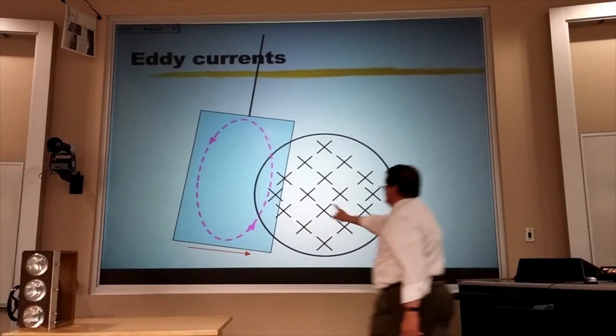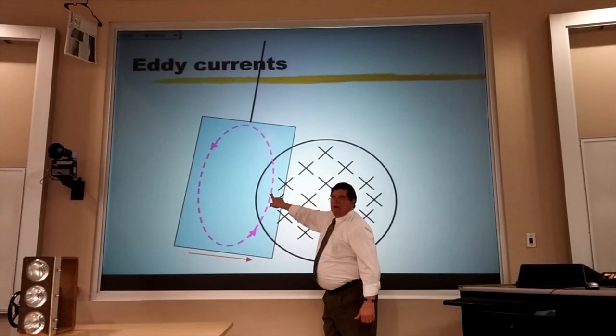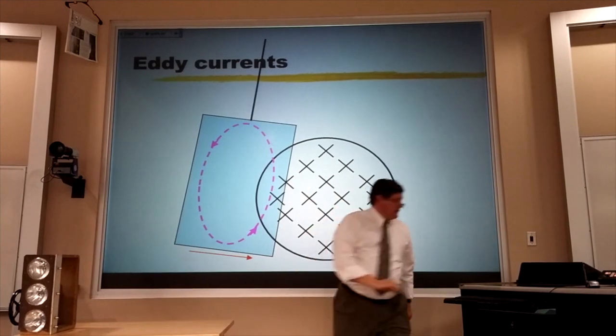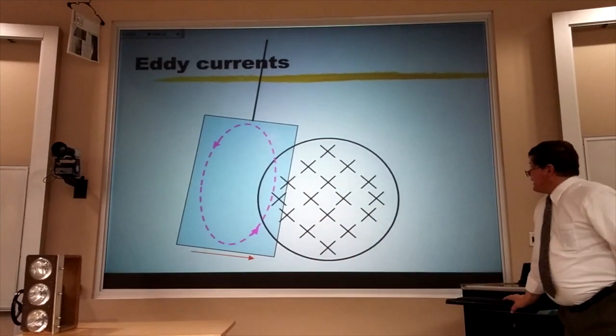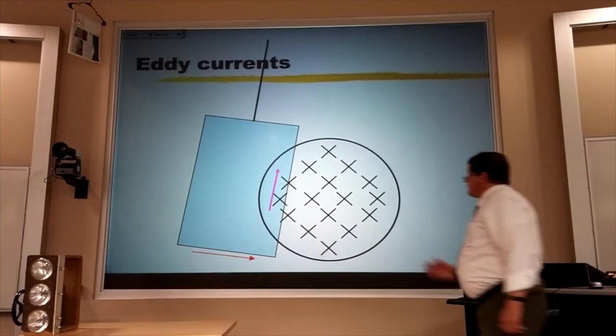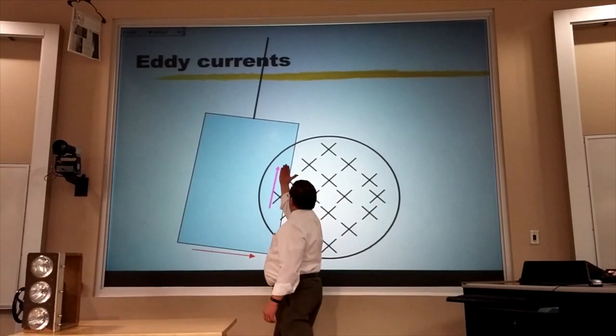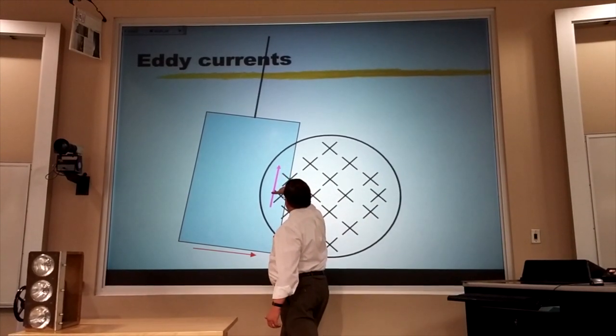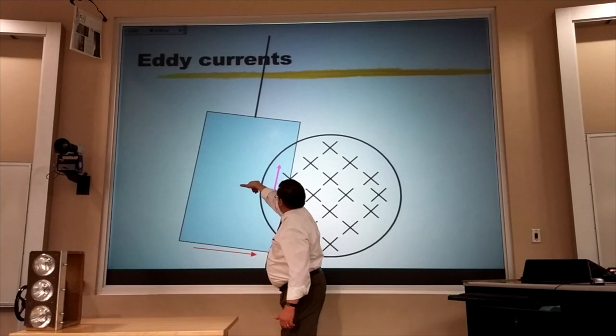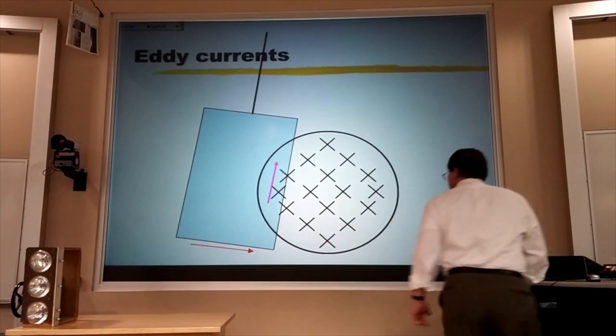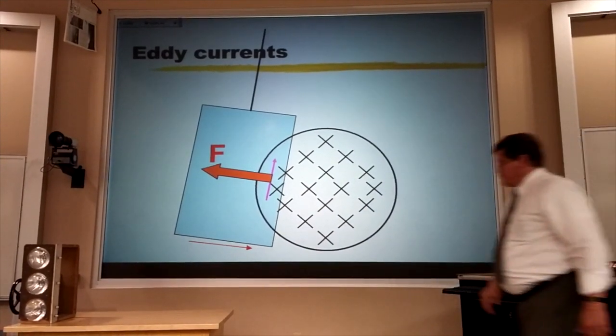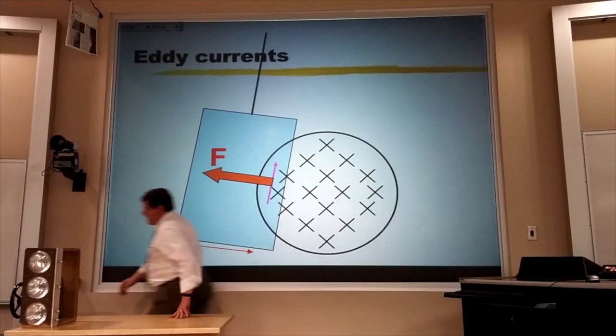Fight that change. I'm going from no field lines into the board to some field lines into the board. Which way do I send field lines? Out of the board. Do it with your right thumb every single time. Out of the board. And that means the current has to flow counterclockwise by right-hand rule number three.